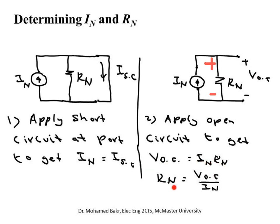R_Thevenin equals R_Norton — they are the same. This nice duality between voltage sources and current sources can be helpful in analyzing circuits. The Norton equivalent circuit and the Thevenin equivalent circuit are related: if you know one, you know the other.